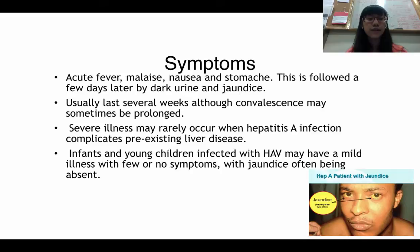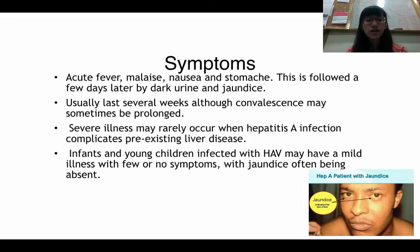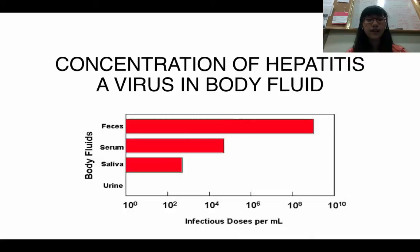What are the symptoms of Hepatitis A? As mentioned earlier, you can find jaundice, but that is also followed by acute fever, nausea, and stomach ache. There is also dark urine after a few days, which is understandable because the main target of Hepatitis A virus is the liver, and the main function of the liver — to detoxify the blood — is now affected. Symptoms usually last several weeks, though convalescence may sometimes be prolonged. Severe illness may rarely occur when Hepatitis A complicates pre-existing liver disease. Importantly, infants and young children infected with Hepatitis A virus often do not show symptoms, so they can unintentionally transmit the disease to others.